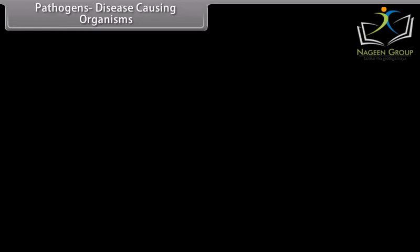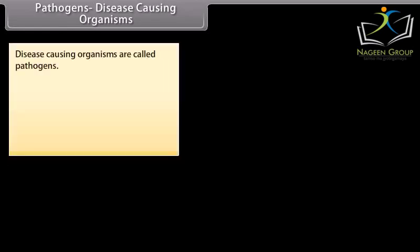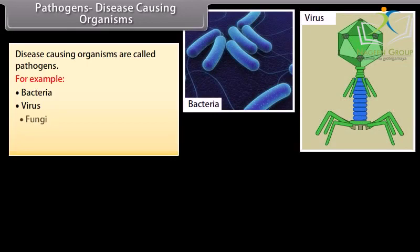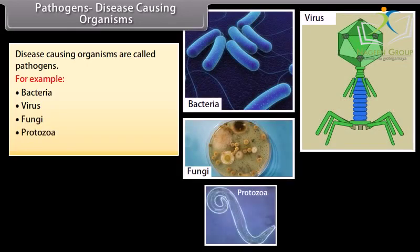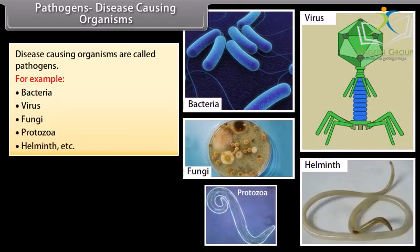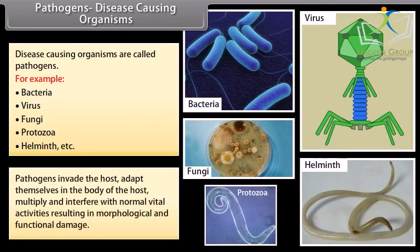Pathogens. Disease-causing organisms are called pathogens, for example bacteria, viruses, fungi, protozoans, helminths, etc. Pathogens invade the host, adapt themselves in the body of the host, multiply, and interfere with normal vital activities resulting in morphological and functional damage.